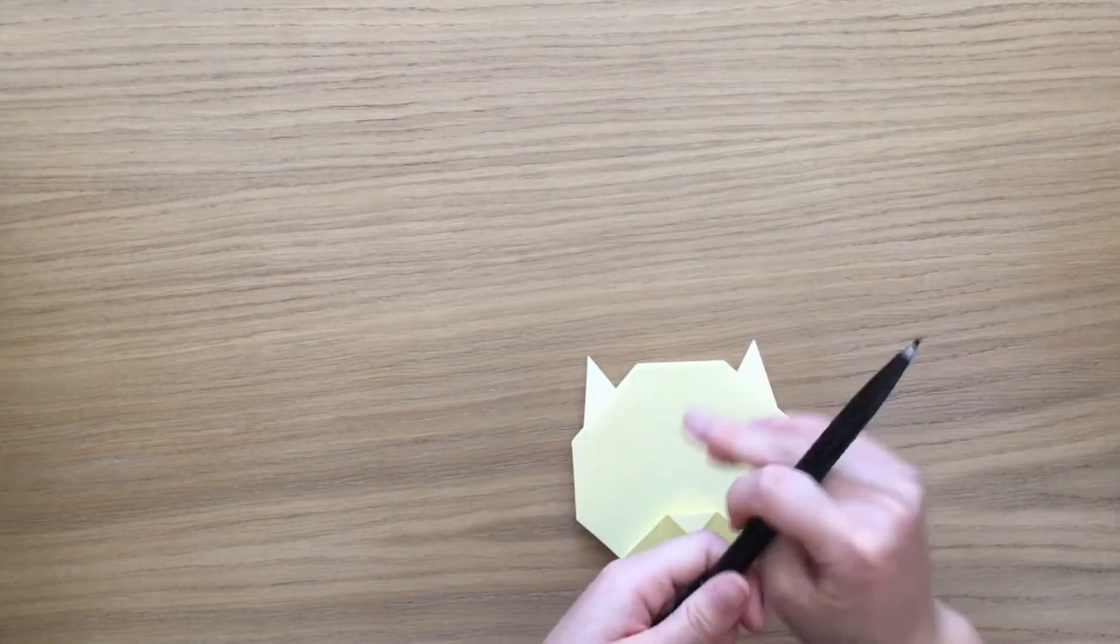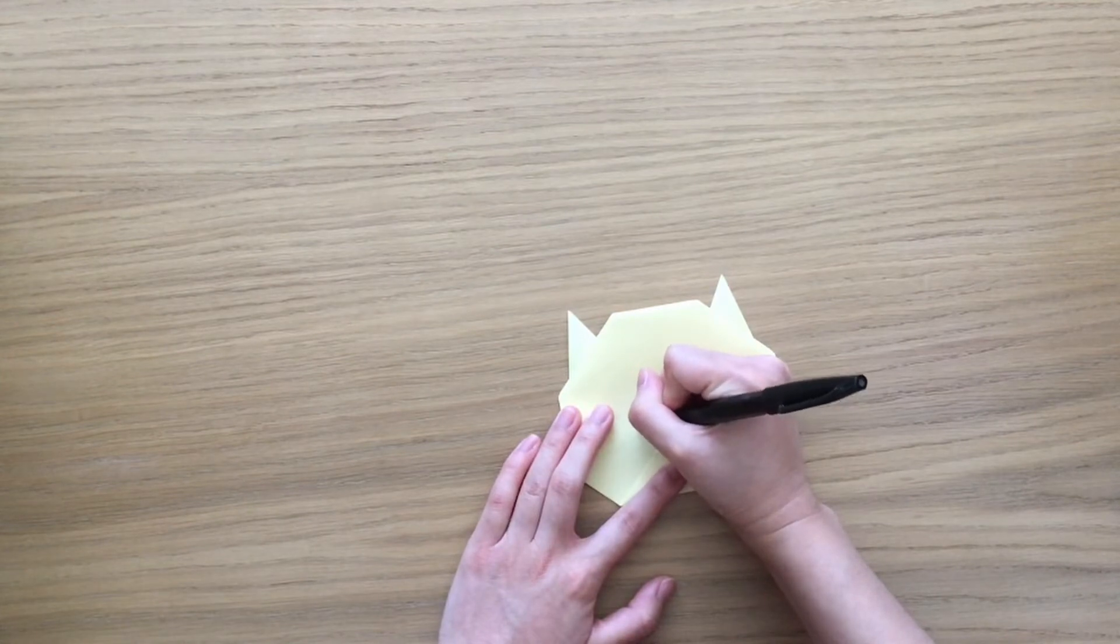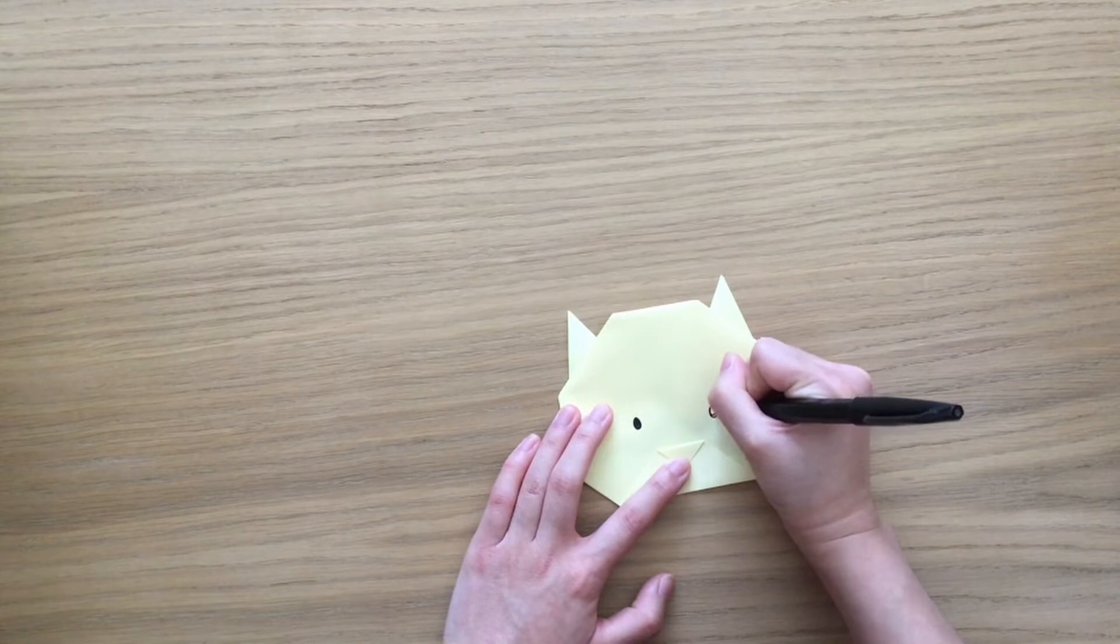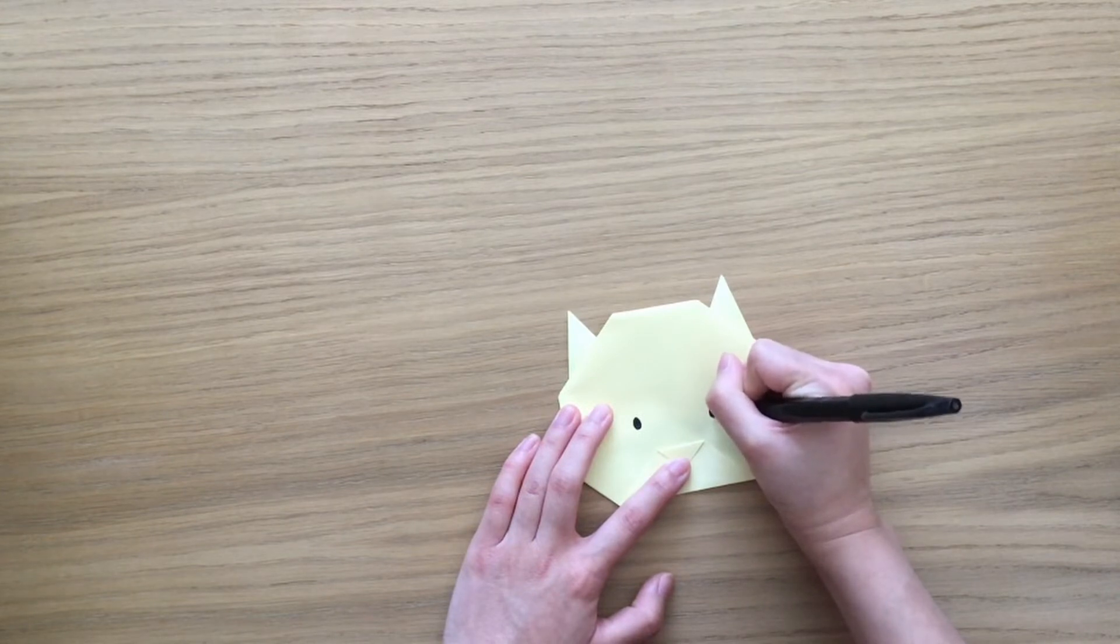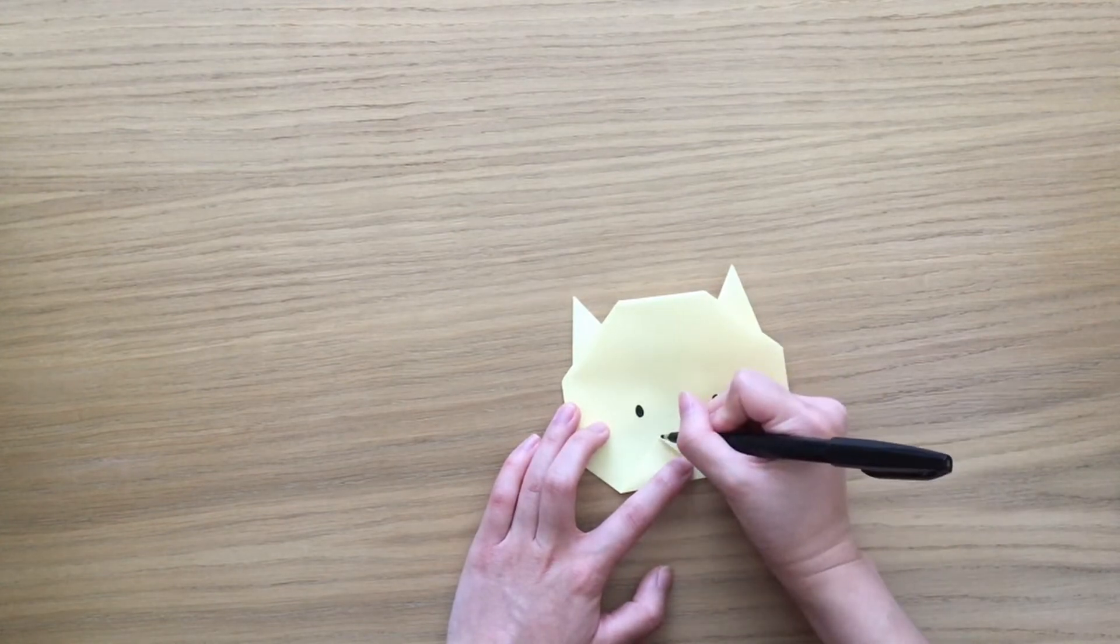Get your pen and draw some eyes. If you've got googly eyes, you can stick these on instead. I'll make it a crazy cat. Color in his nose.